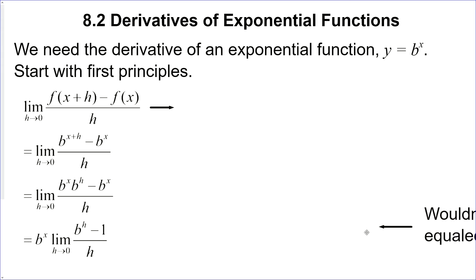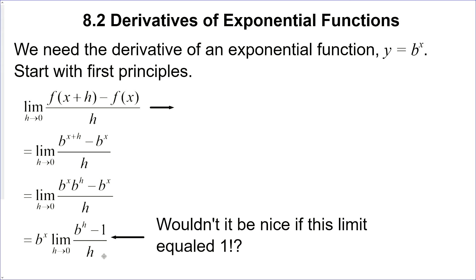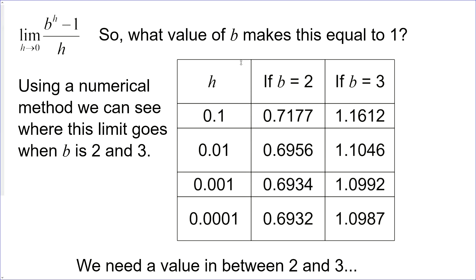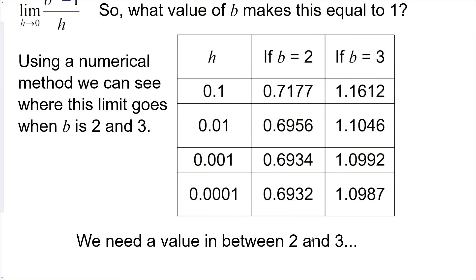It would really be nice if this limit would just equal one, and then the derivative of b to the power of x would just be b to the power of x. So what value of the base would make this limit equal to one? We can use a numerical method — try the base as two and the base as three, sending h closer and closer to zero. We can see that this expression seems to get closer and closer to 0.69, and this one to 1.09. So we need a b value somewhere between two and three, closer to three.